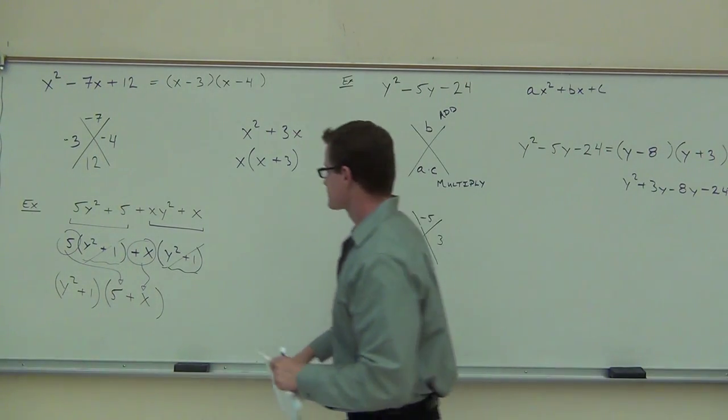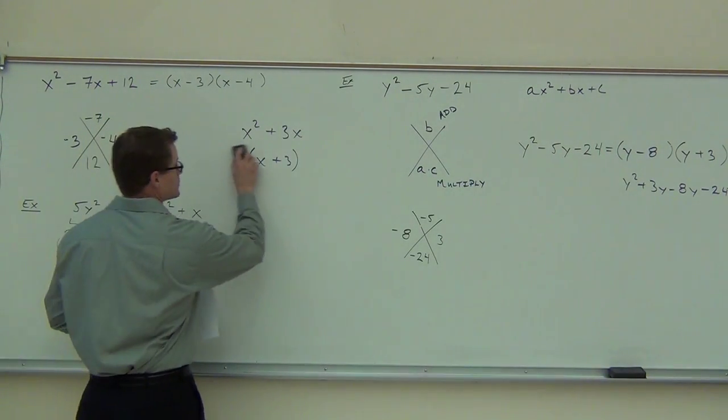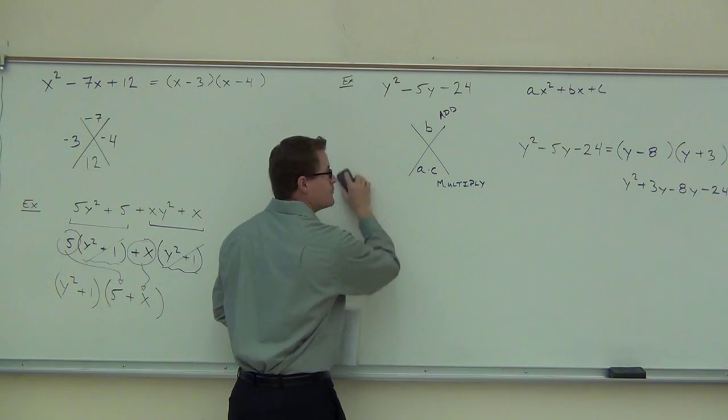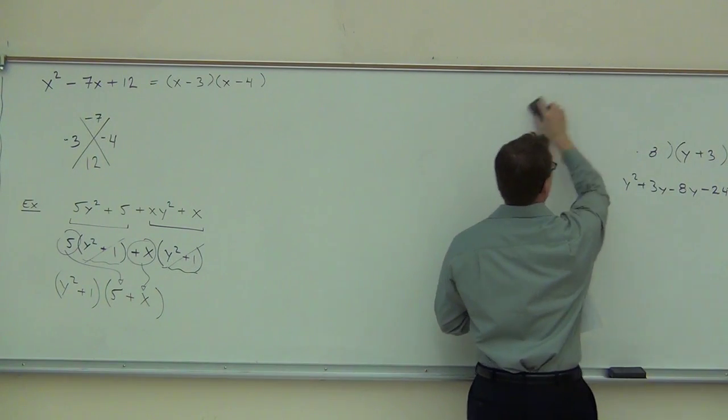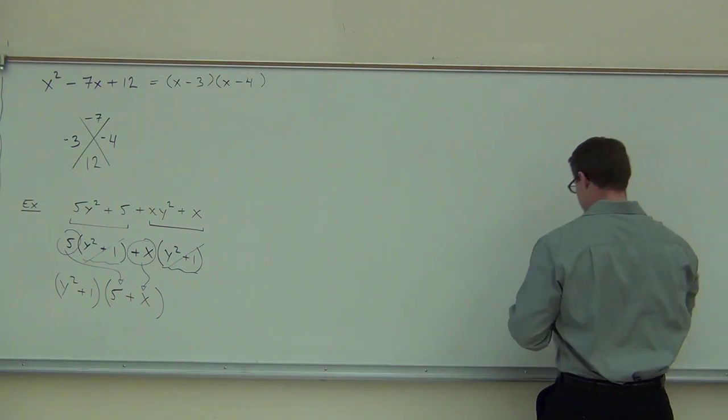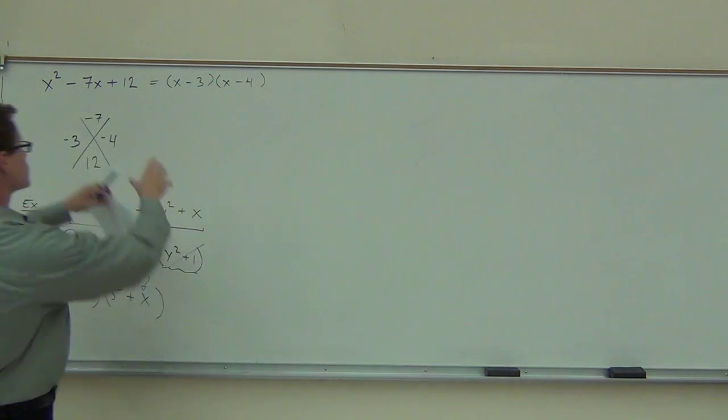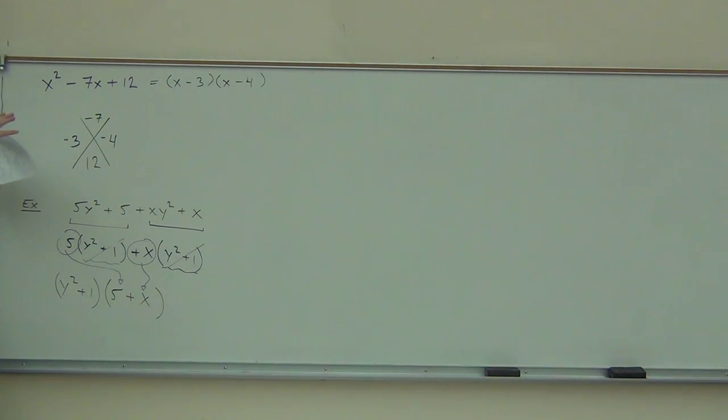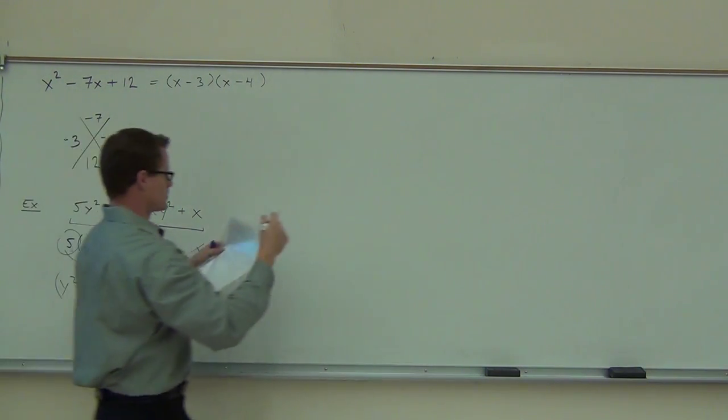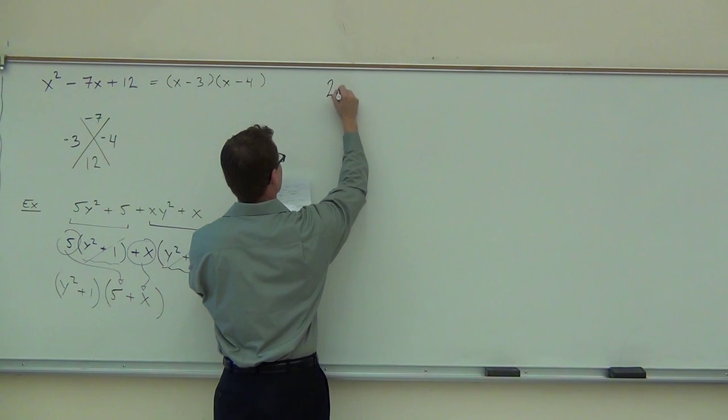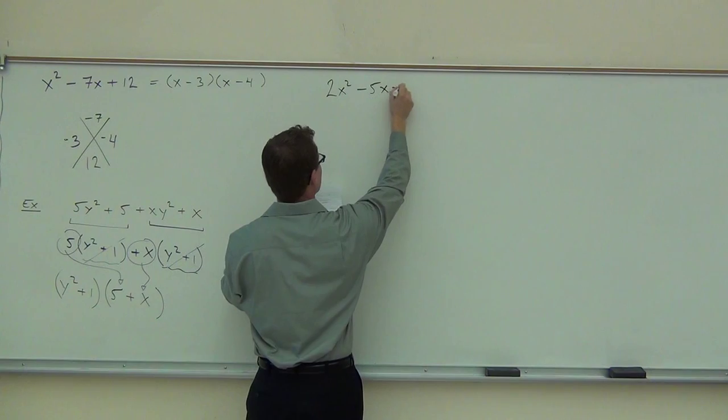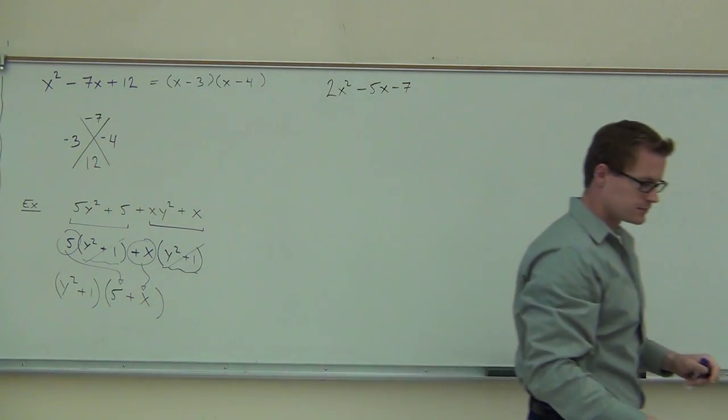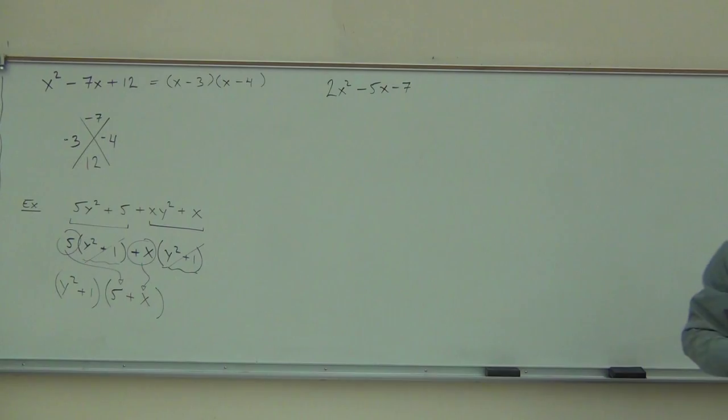Now we're going to use this and we're going to be able to factor three terms that might not have a 1 in the place of our A coefficient. Let me show you what that looks like. So we've done these ones. You feel pretty good about the diamond method so far, right? Grouping, you feel okay about the grouping?